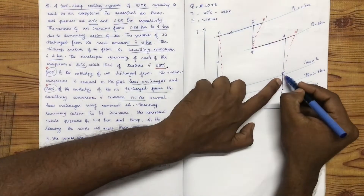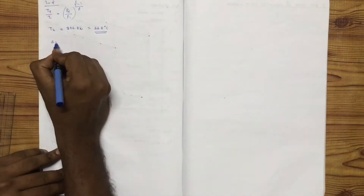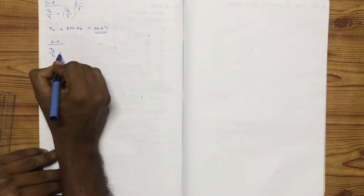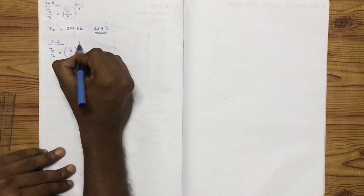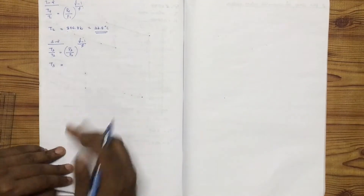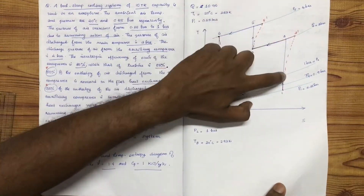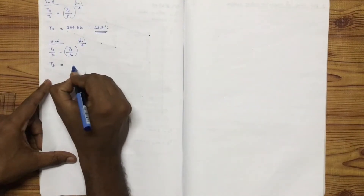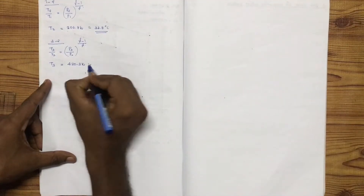T2 is equal to 306.8 Kelvin, which is minus 273 degrees Celsius. For the isentropic process 2 to 3: T3 by T2 is equal to P3 by P2, the whole raised to gamma minus 1 by gamma. T3 is equal to 420.3 Kelvin.